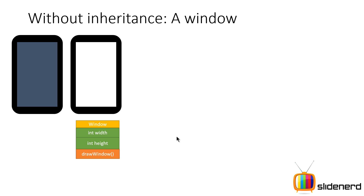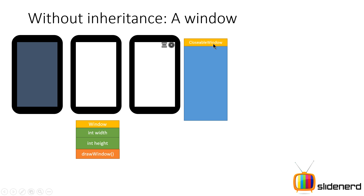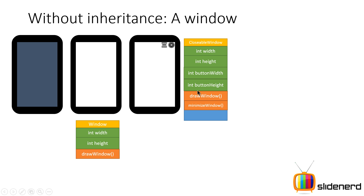Now let's look at a more special type of window. Someone tells you to add minimize and close buttons to those windows. You take the same class again and make a class called CloseableWindow. This time you again define width as 480, height as 800, a drawWindow method, button width, button height, a minimizeWindow method that performs the work of minimizing the screen, and a closeWindow method that closes the screen.